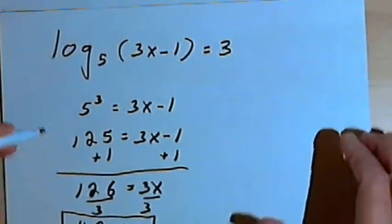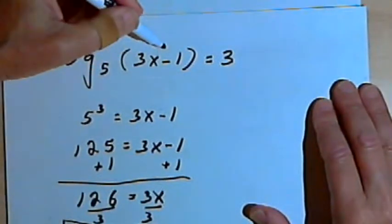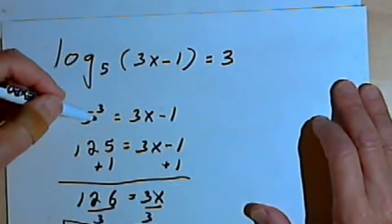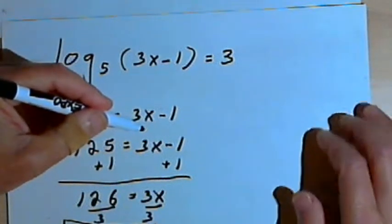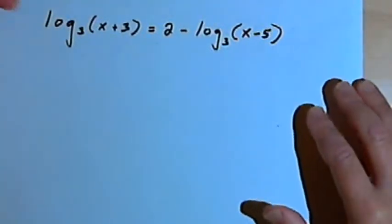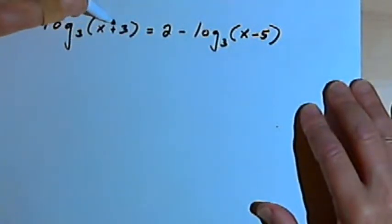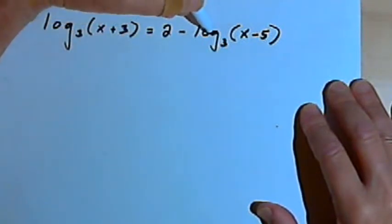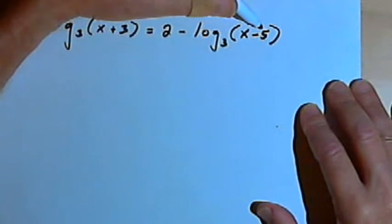So really all I did was take the original logarithmic equation, convert it to exponential form, and solve for x. Here's another one. This says the log base 3 of x plus 3 equals 2 minus the log base 3 of x minus 5.